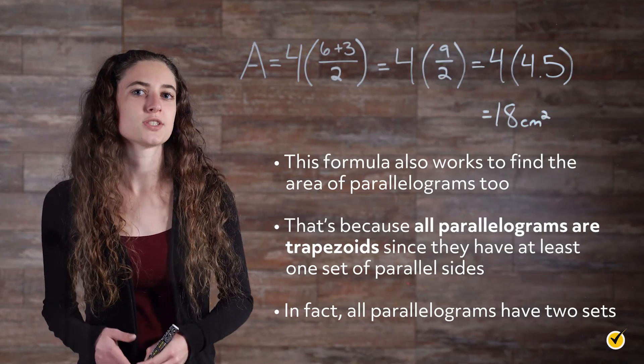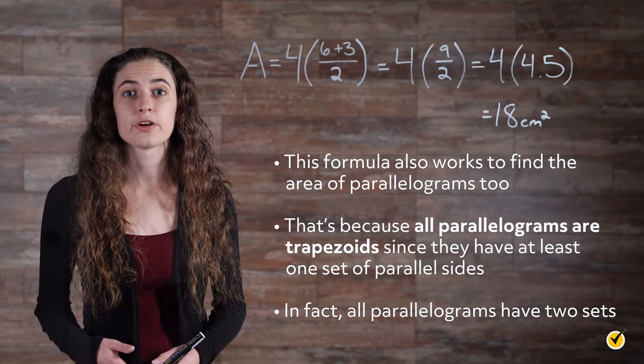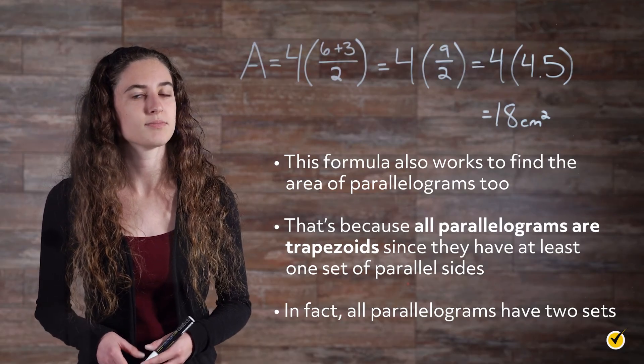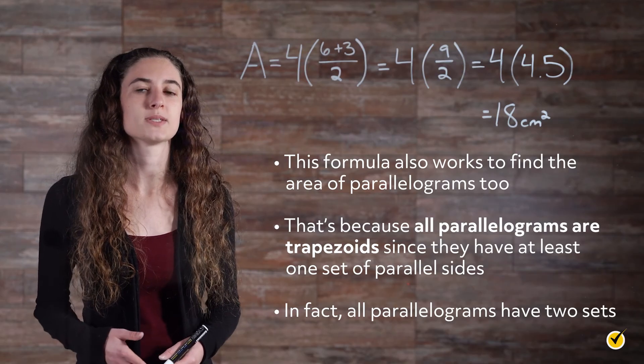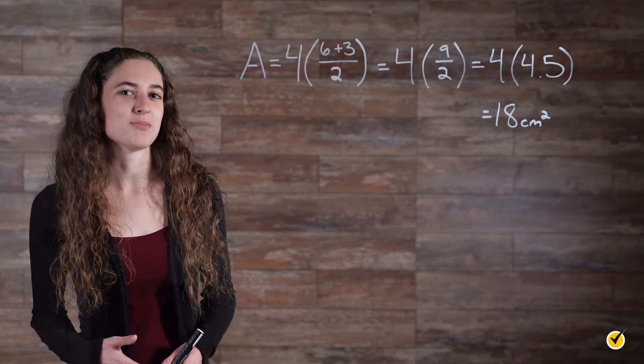This formula also works to find the area of parallelograms. That's because all parallelograms are trapezoids since they have at least one set of parallel sides. In fact, all parallelograms have two sets. That's about all there is to finding the perimeter and area of trapezoids. Thanks for watching and happy studying!